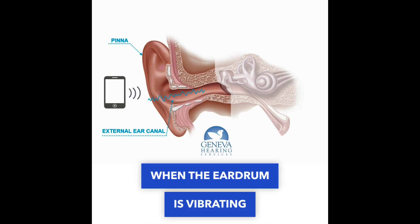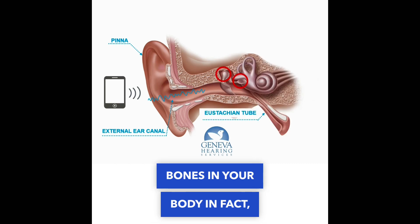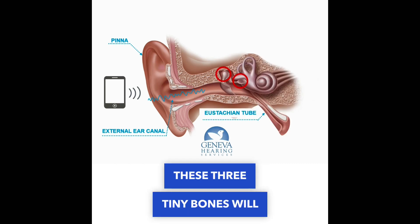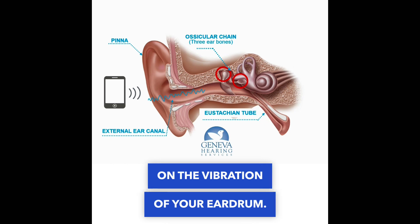When the eardrum is vibrating, there are actually three tiny bones — the smallest bones in your body, in fact — and these three tiny bones will rock back and forth based on the vibration of your eardrum.